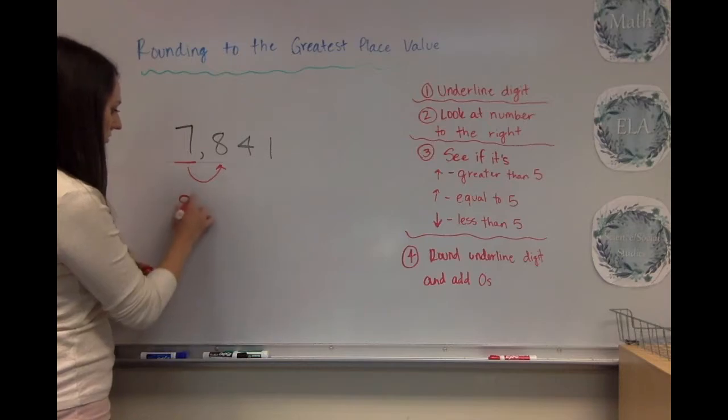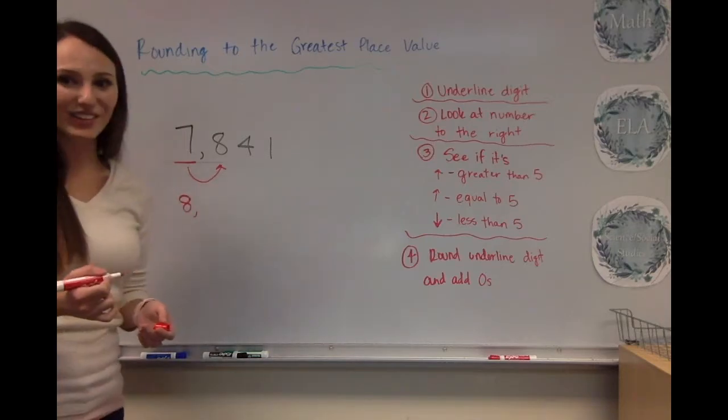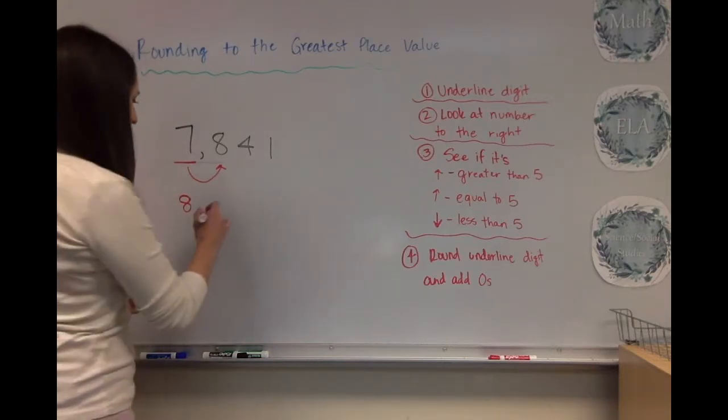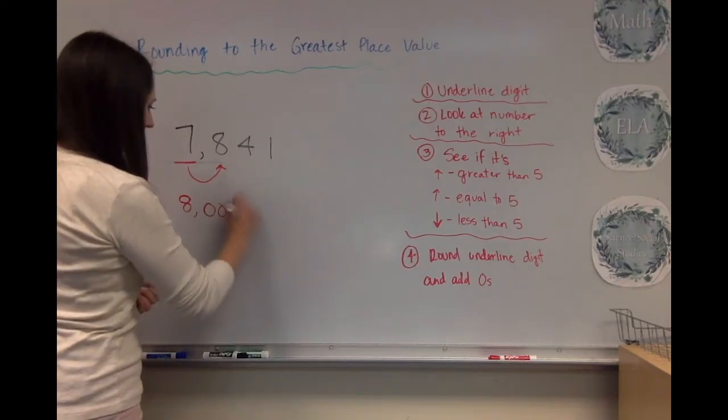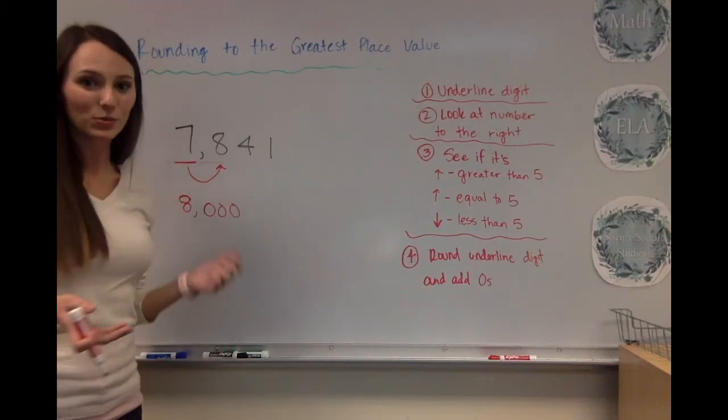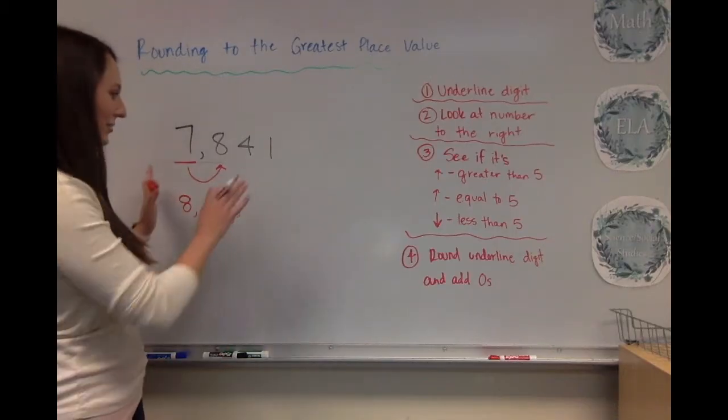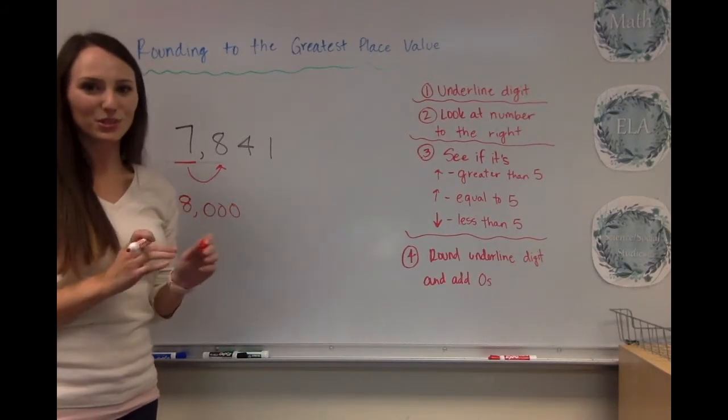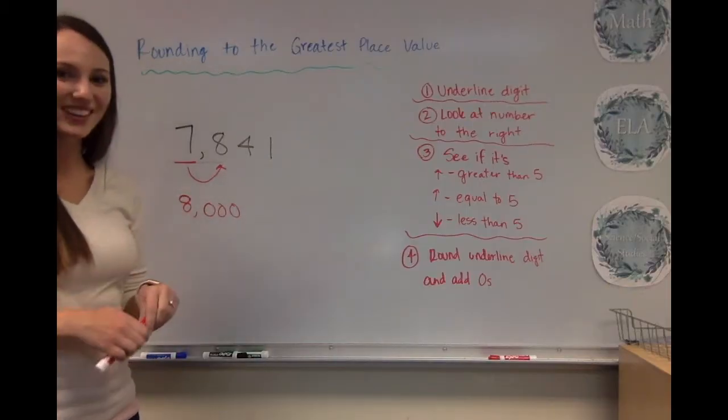change it to an 8, and then the rest of our numbers will be zeros. So rounding 7,841 to the nearest thousand, we get 8,000. I know I'm a little cut off right now. I'm going to scooch my number over next time. Sorry about that.